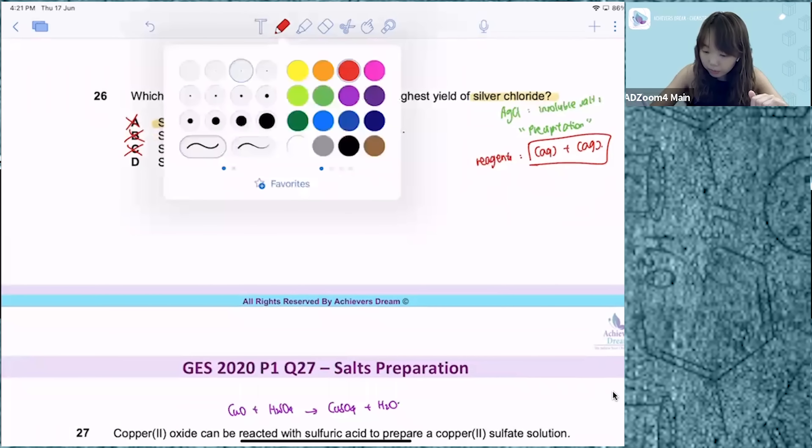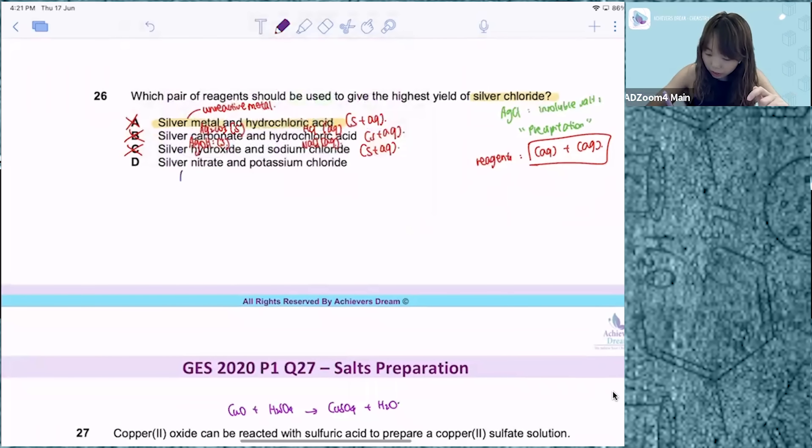Now for option D, you have silver nitrate, which is soluble, so it's going to be in the aqueous state. Take note, all nitrates are soluble.